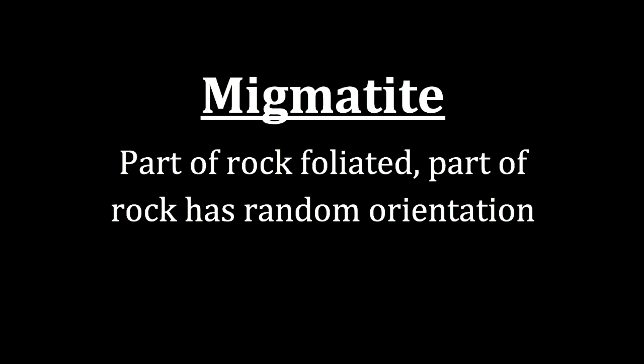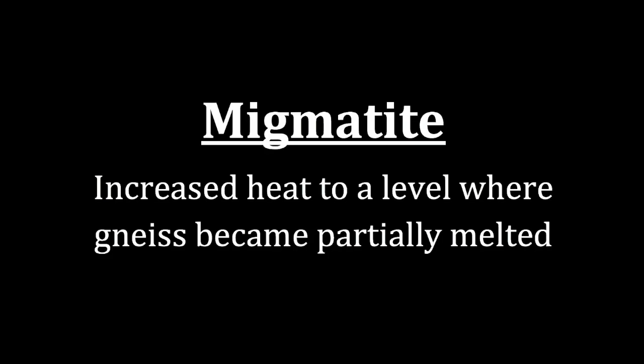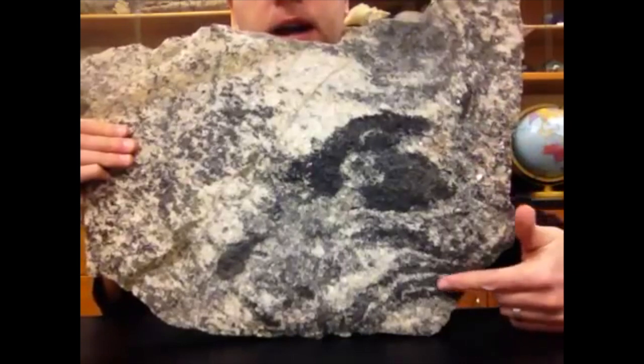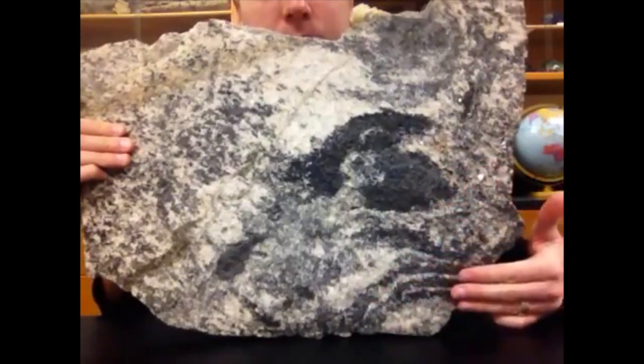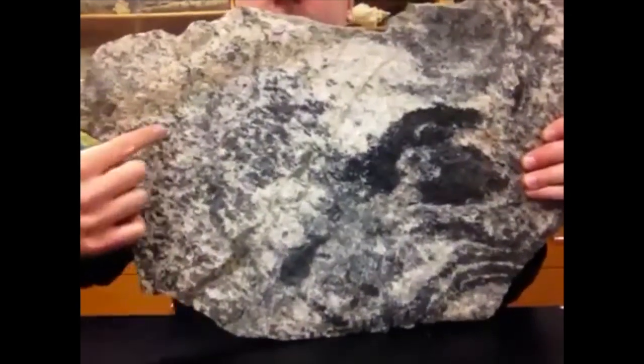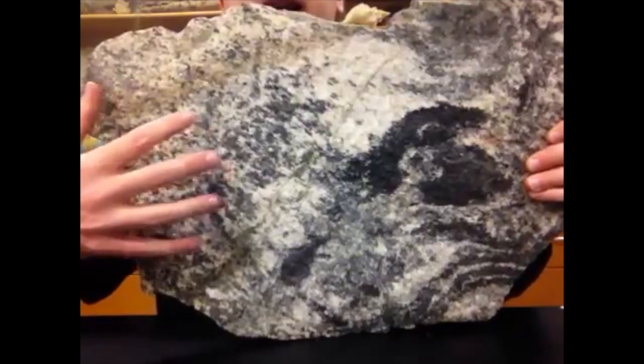The last rock in this video is somewhat debatable — is it metamorphic or igneous? That rock is migmatite. Part of the rock shows foliation, while other parts show random orientation like we would see in an igneous rock. What we're looking at is an increased amount of heat that has caused part of the gneiss to undergo partial melting. You can see part of the rock still showing foliation with some alignment, while other parts show completely random orientation.